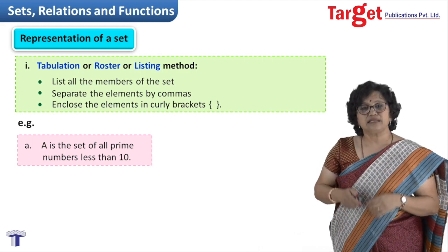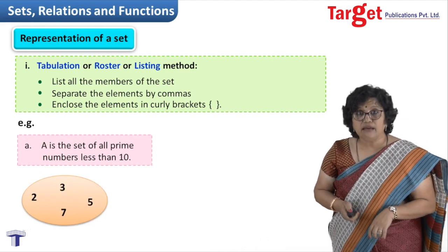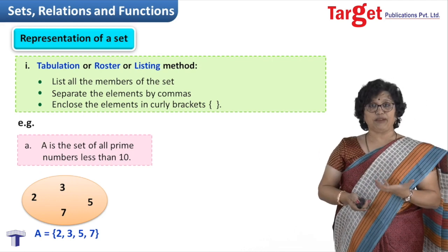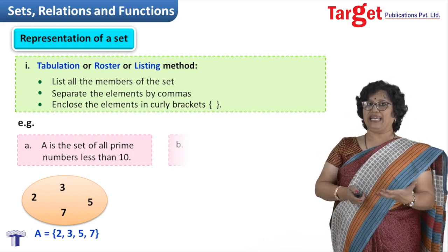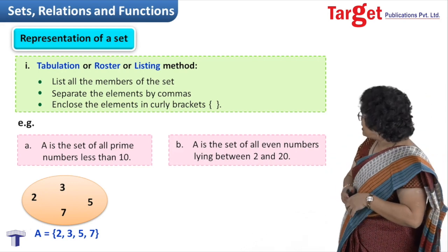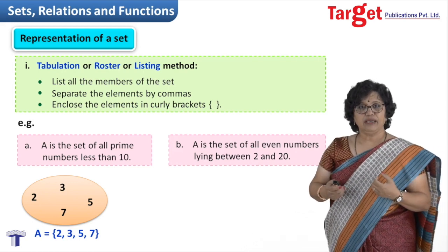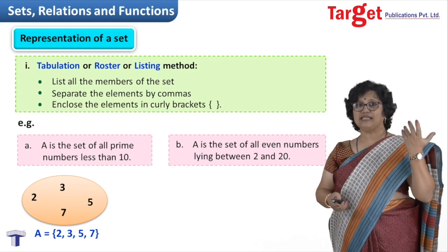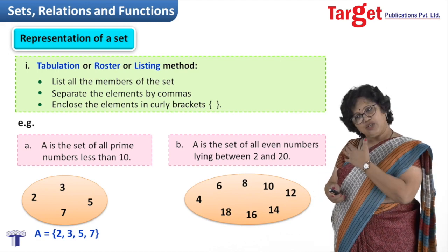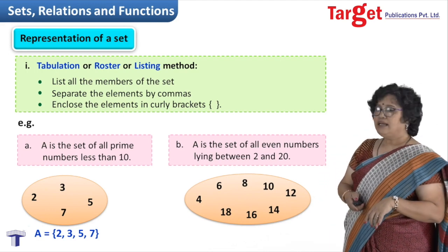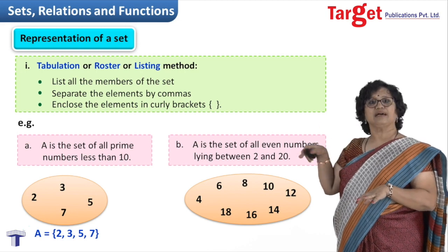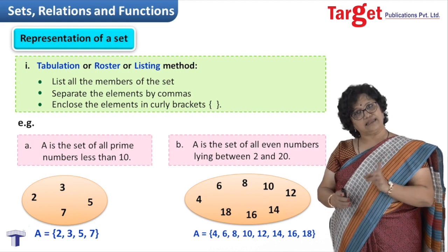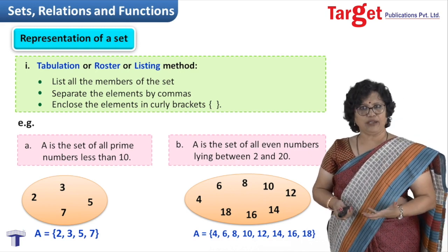Now if I have to write the set of all even numbers lying between 2 and 20, when I say between, obviously 2 and 20 are not to be taken, so the list starts with 4, 6, 8, 10, 12, 14, 16, 18. You can actually show it in a circle or write it in curly brackets: 4, 6, and so on till 18. That would be the notation.